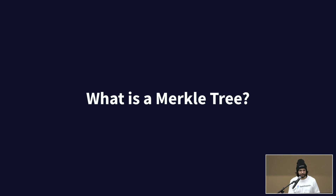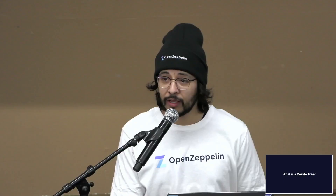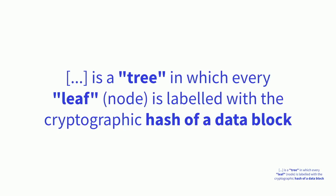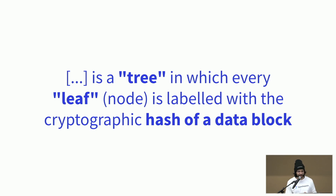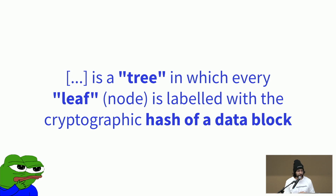Let's start by asking: what is a Merkle tree? A Merkle tree is basically a data structure that allows us to save information in a compressed way in a smart contract. You don't need to put all the information in the smart contract — you just have to put the root hash, and that's enough to verify that some element is part of the Merkle tree. By definition, it is a tree in which every leaf is labeled with a cryptographic hash of a data block.